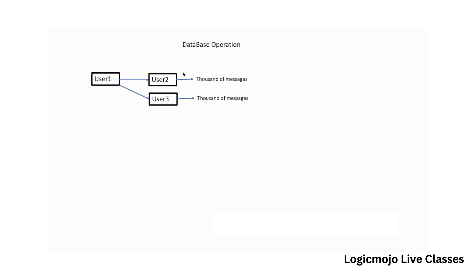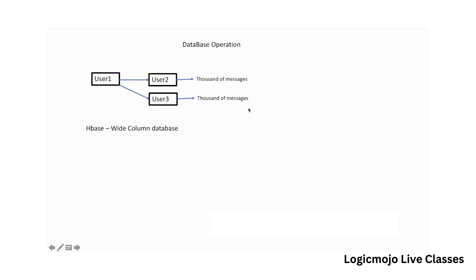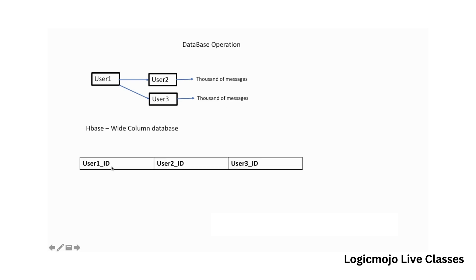A user is mostly interested in sequentially accessing messages. In this particular requirement, we can't use MySQL or MongoDB — we need a wide-column database solution. For each connection between users, we have a huge list of messages — in fact thousands or lakhs of messages. So we use HBase for storing the data, because HBase is very efficient for storing variable-size data. This is a wide-column database. Let's say you have user 1, and user1_id is the ID. This user has a connection with user 2 and also with user 3, so there are two different connections.